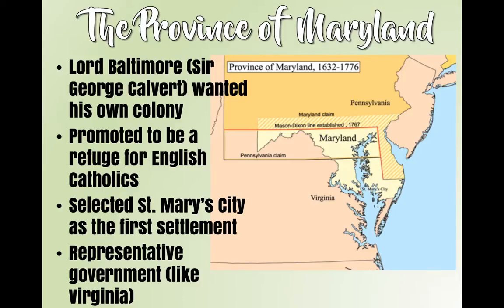His son ends up taking over after he dies and establishes this colony. A lot of settlers come, yes, for the religious freedom, but also because Maryland has a lot of natural resources and really good farmland. They're not just welcoming Catholics — they're very tolerant and accept Protestants as well. They create an Act of Toleration, which basically says you are welcome to come here and practice your religion freely.